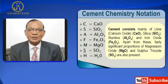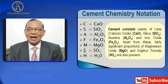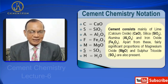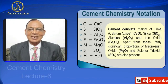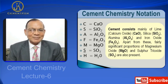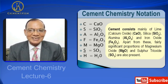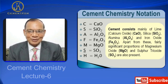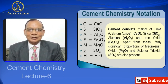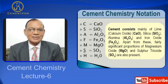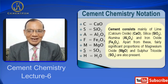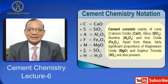Before I talk about composition of cement, I would like to tell you about cement chemistry notation, that is abbreviations used in cement chemistry. Actually, in a lighter note, cement chemists are a little bit lazy, so they have devised this shorthand notation for various oxides. So C stands for CaO, that is calcium oxide. S stands for silica SiO2, A stands for alumina Al2O3.